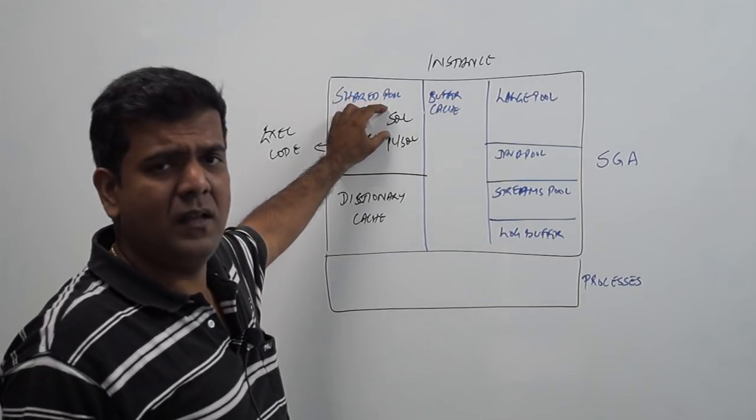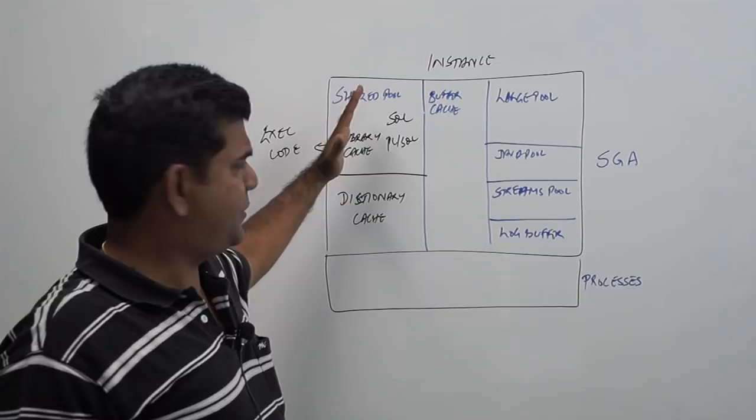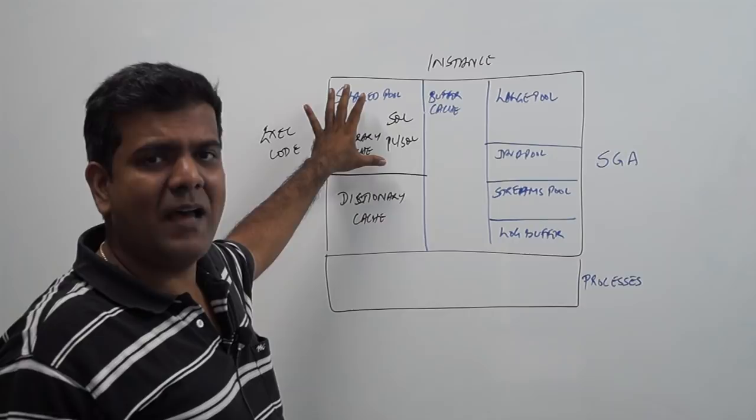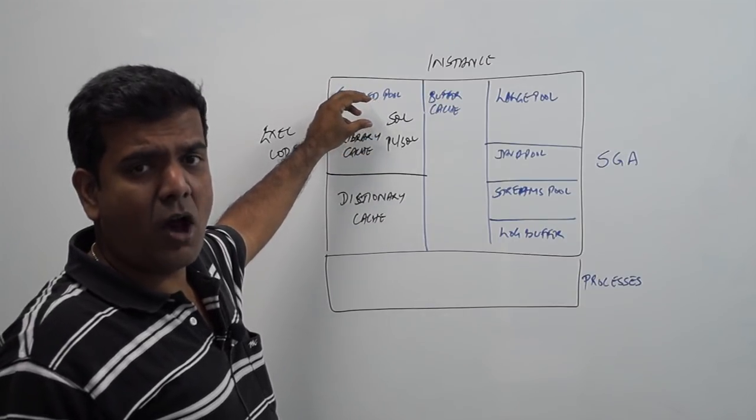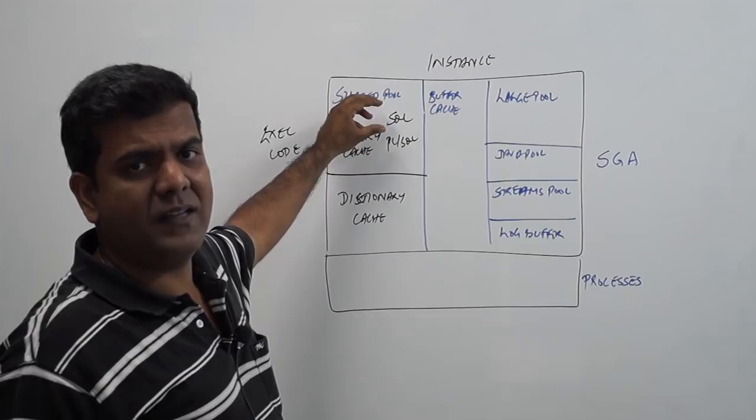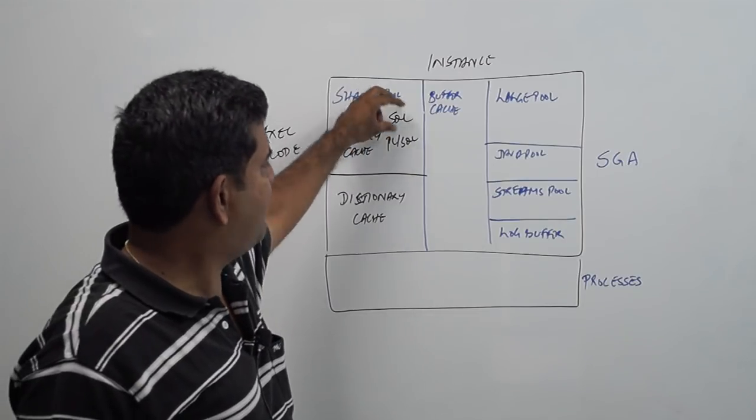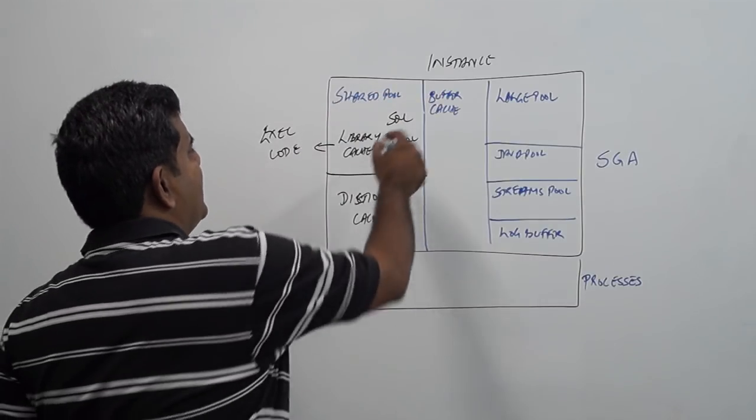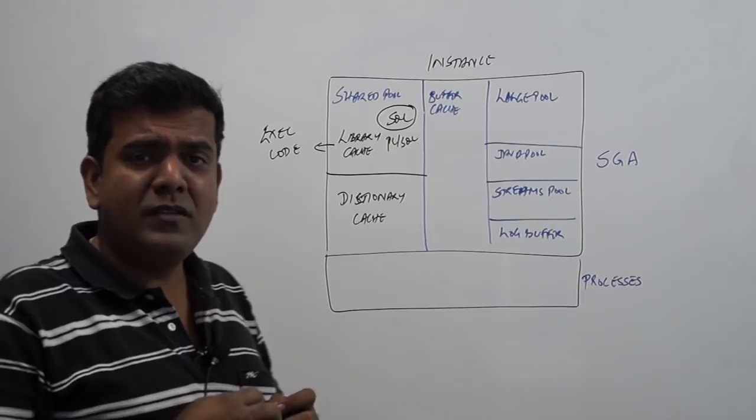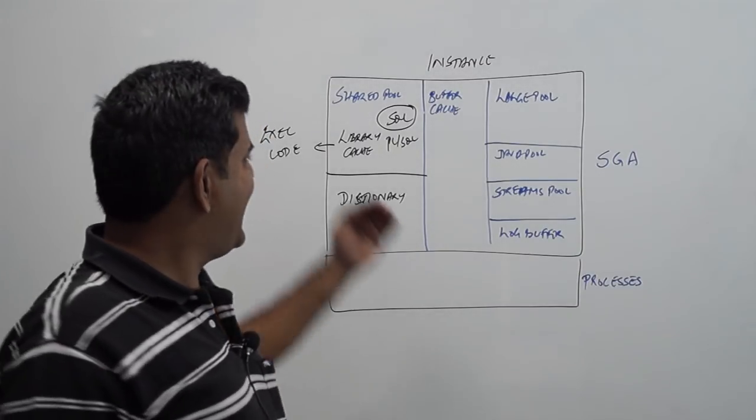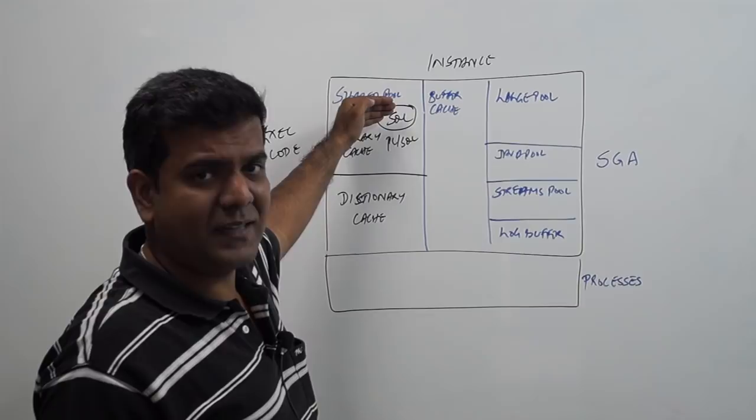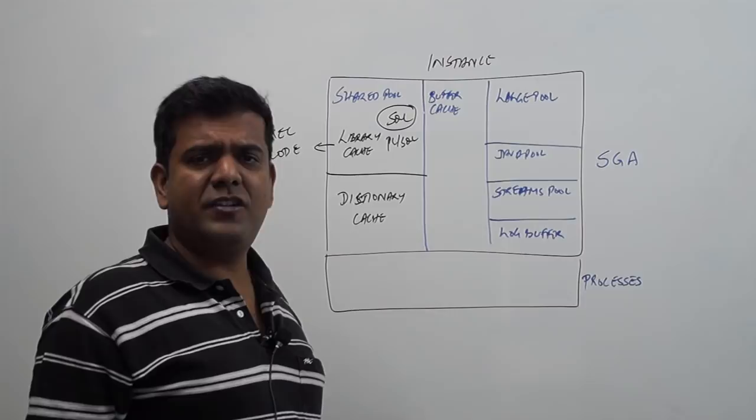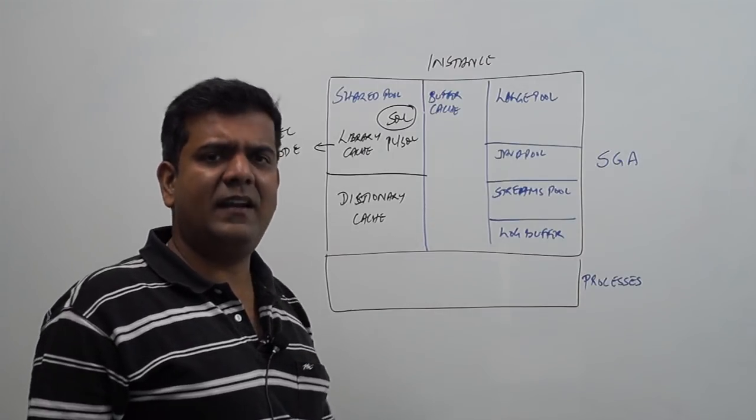Now, when I say there is a SQL, a SQL comes from a user session and it undergoes a parse and when a parse happens, a hash value is created and the optimizer generates what is called as an execution plan. So, every SQL has an SQL area which is available here inside the library cache. So, if the same SQL is executed again, it can reuse whatever has already been parsed and kept and execute the statement.